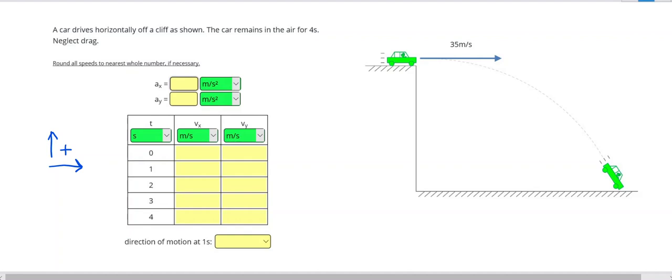So this time, a car drives off a cliff as shown. The car remains in the air for four seconds. All right. So since we are in free fall, the accelerations are zero for horizontal and negative 10 for vertical.